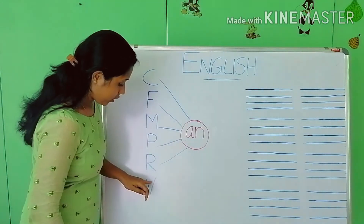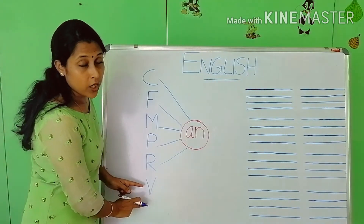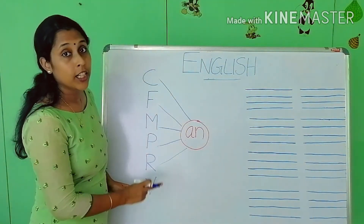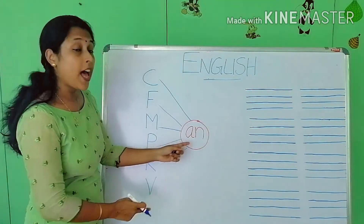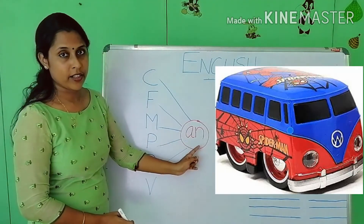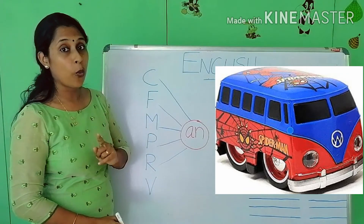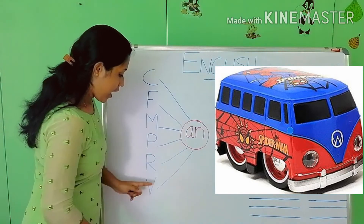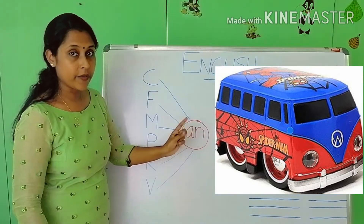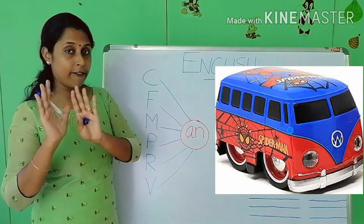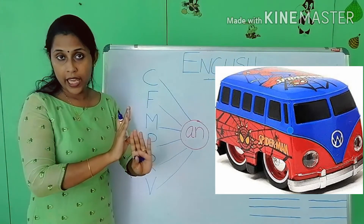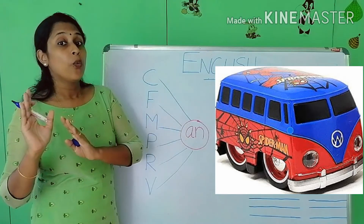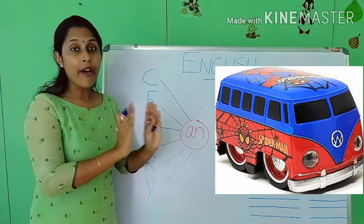Next, this alphabet is B. What is the sound of B? The sound of B is V. V and AN — 'van'. You know what a van is, right? When we put together the alphabet B, A and N, it makes the word 'van'.